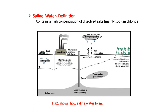Saline water contains high concentration of dissolved salts, mainly sodium chloride. There are different factors responsible for formation of saline water: wastewater and brine discharge from different industries, road salts, salt deposits, marine deposits, high evaporation and low precipitation, and inadequate drainage and intensive irrigation causing rising water table.